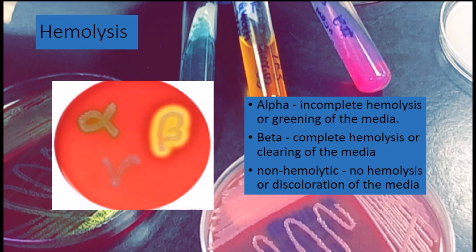My last slide covers hemolysis. Alpha hemolysis is incomplete hemolysis, or greening of the media. Beta hemolysis — represented by the Greek symbol beta — is complete hemolysis or clearing of the media. If you hold the plate up to the light and can see completely through it, that is definitely a case of beta hemolysis. Then you have non-hemolytic, or gamma hemolysis. This wraps up part one — I'll be adding more videos in the next couple of weeks. Thank you for watching.